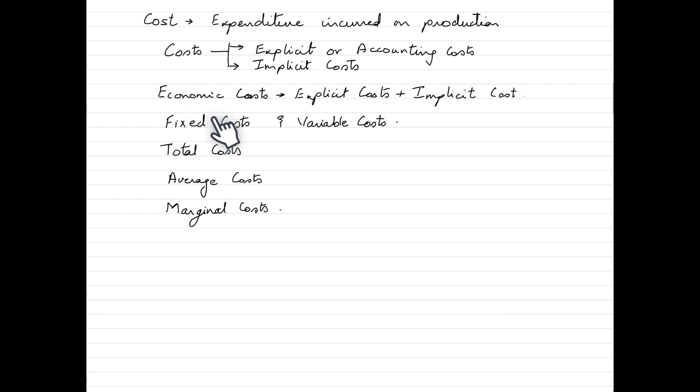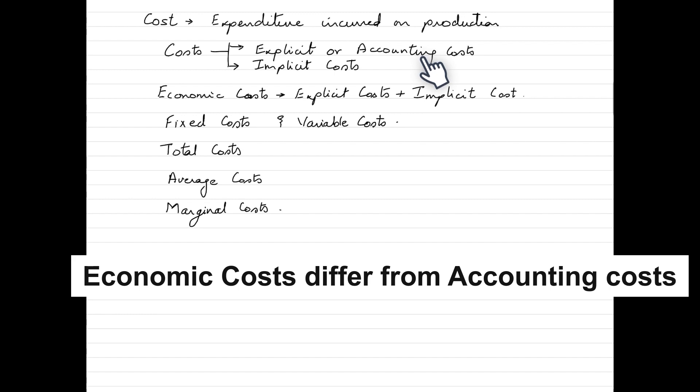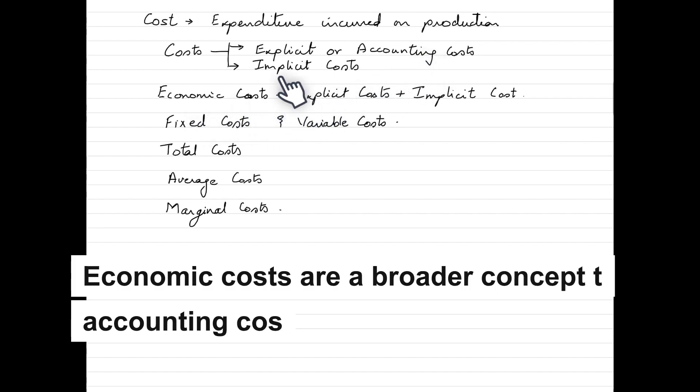When we talk about economic costs, it's a combination of both explicit and implicit cost and hence they are different from accounting costs. On a scale, if we say economic costs are a wider term as compared to accounting costs.